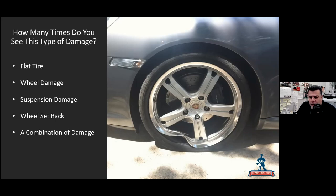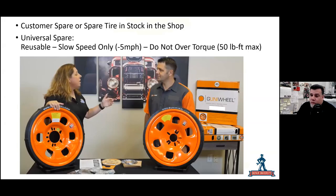The rim obviously has to be changed, but given the significant damage you should anticipate some suspension damage as well. Driving the vehicle inside the shop or around your yard would be very difficult with this wheel — you could damage the rocker molding, the bottom of the bumper cover, or lose control and hit something else. So you want to be very careful. What do we do? We have one of two options.